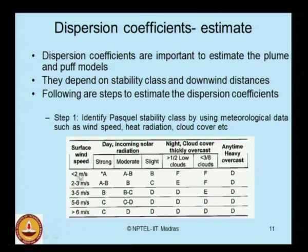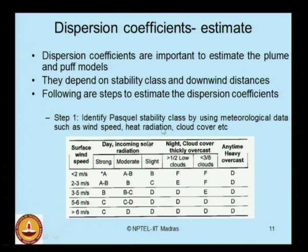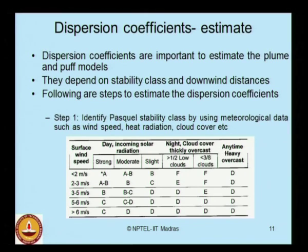If you know the surface wind speed, incoming solar radiation during the day, and cloud cover at night, different categories of modification in day radiation and night cloud cover — classified as strong, medium, and slight — give you stability classes A, B, C, D, E, and F for different surface wind speeds ranging from less than 2 m/s to greater than 6 m/s. For a given site with known meteorological data, you first identify the Pasquill stability class. The dispersion coefficients can be determined by two ways: graphical technique or algebraic equations.